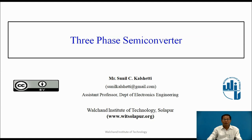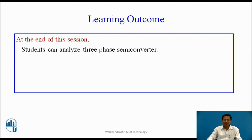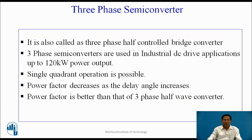Today I am going to explain the three-phase semi-converter. It is also called as a three-phase half-controlled bridge converter. Three-phase semi-converters are used in industrial DC drive applications up to 120 kW power output.